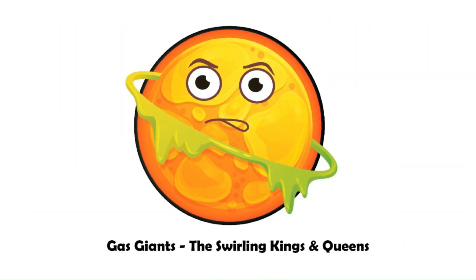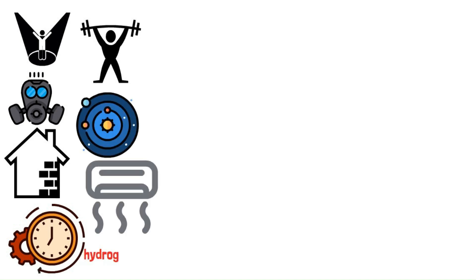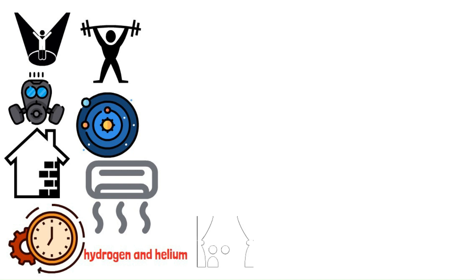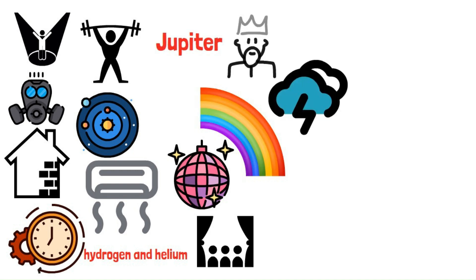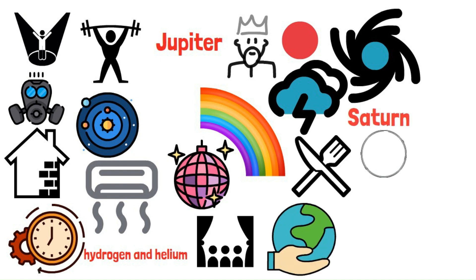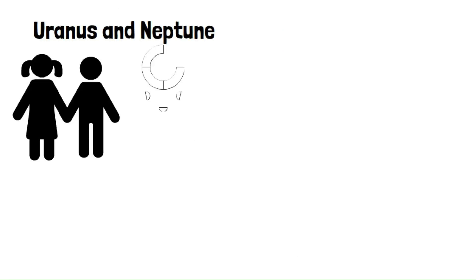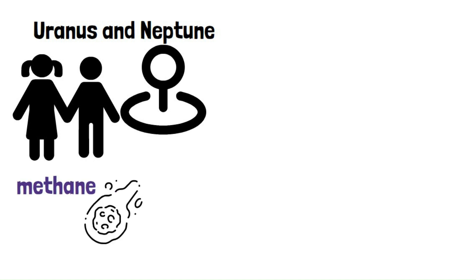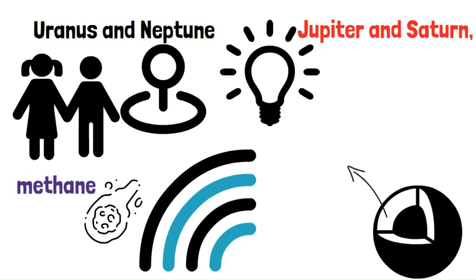Gas giants. The swirling kings and queens. Time to step aside, brick houses. These gas giants are here to steal the show. These heavyweight champions rule the solar system with their massive swirling bodies of gas, mostly hydrogen and helium. They put on light shows that would outshine any disco ball with their colorful atmospheres. Jupiter, the king of these gas giants, is a swirling storm king, with its iconic great red spot, a monstrous hurricane raging for centuries big enough to swallow Earth whole. Saturn, the ringed wonder, boasts a dazzling system of ice dust particles, a constant source of awe for astronomers. Uranus and Neptune, the cool cousins, tilt on their sides like cosmic bowling pins. Their methane-laced atmosphere gives them a beautiful blue-green hue. They might not be flashy like Jupiter and Saturn, but they hold mysteries like Neptune's unexpectedly hot core.